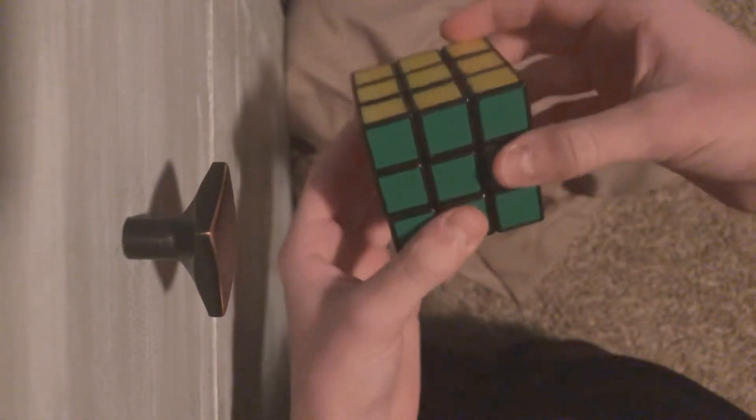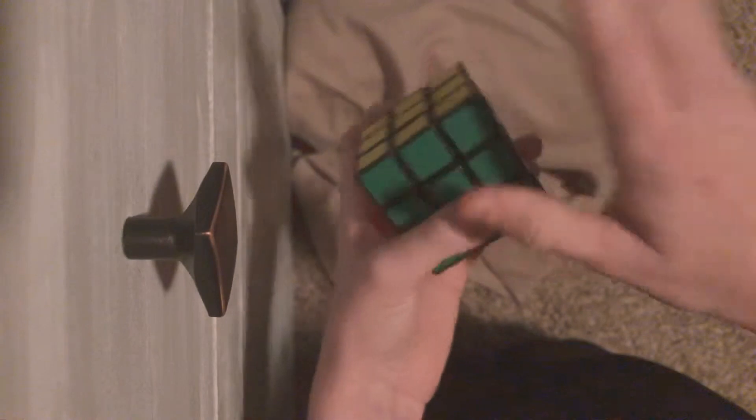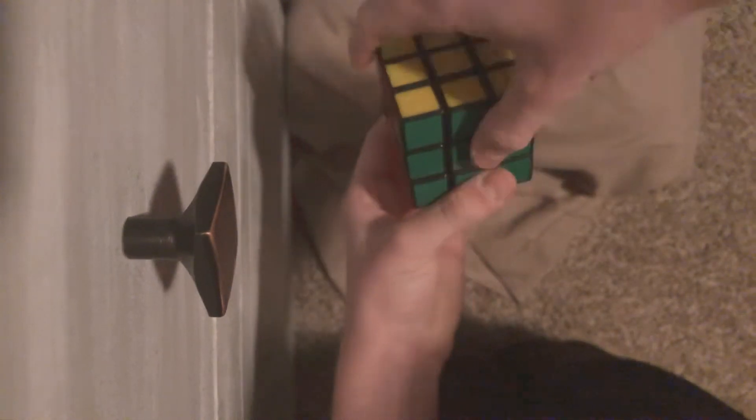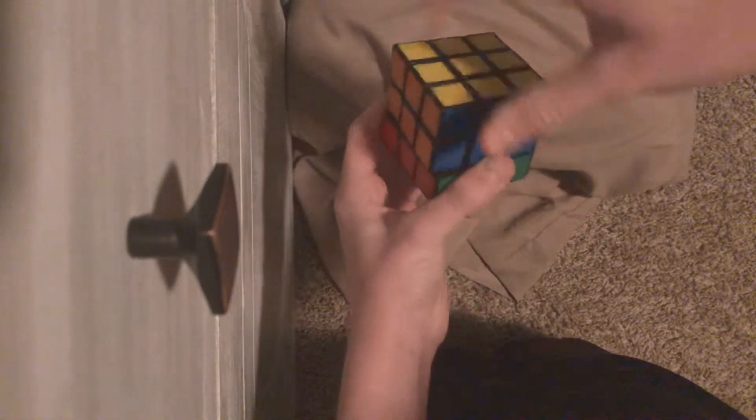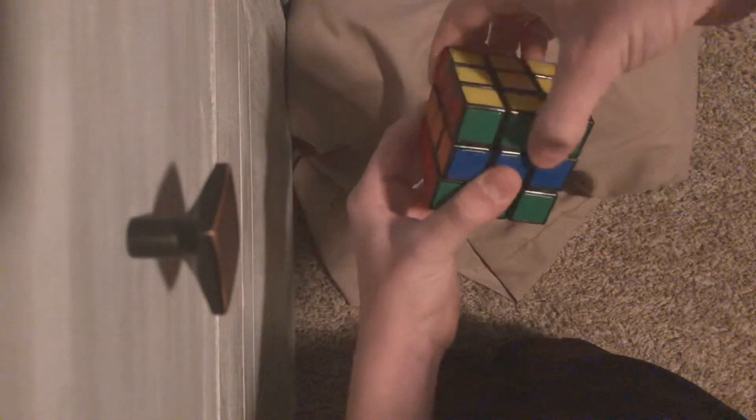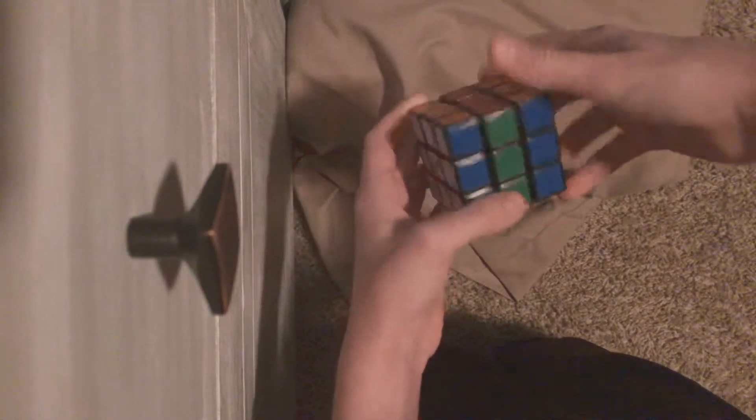I'm just gonna go for the green. You're gonna take these top two, twist like this, and then go like that. Then you take this top part, rotate it back, and you should have this.